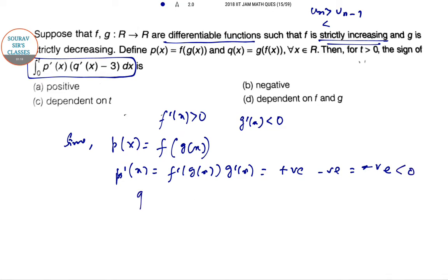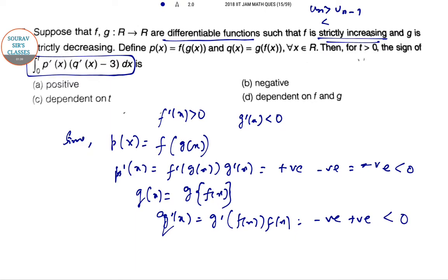Similarly, q(x) = g(f(x)), so q'(x) = g'(f(x)) · f'(x). This is minus times positive, so ultimately this is also negative.